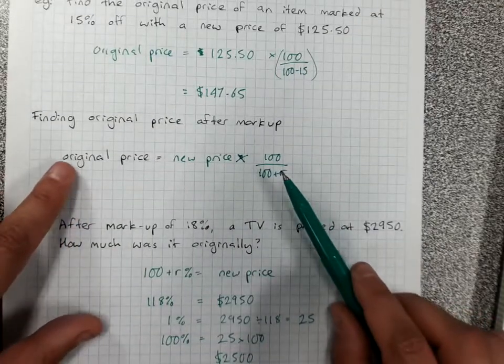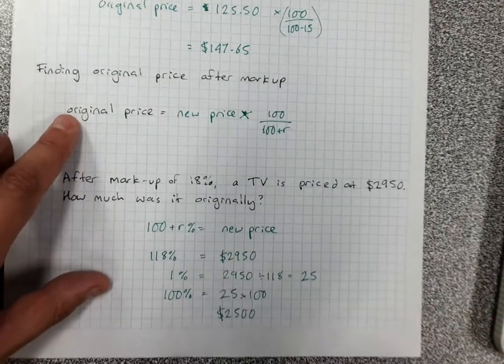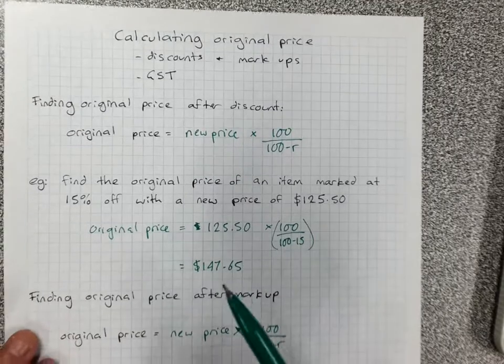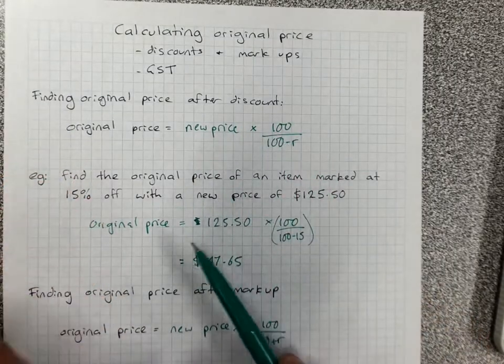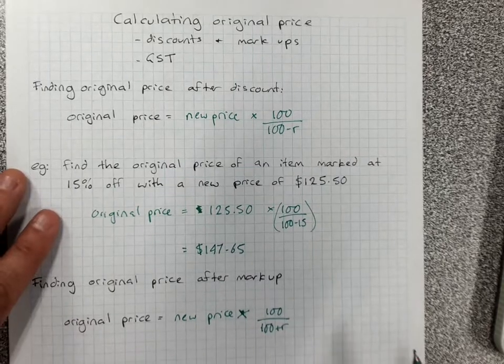If you prefer to use the formula, that would be fine too. So this is when we're finding an original price when I know the new price and the percentage increase or decrease.